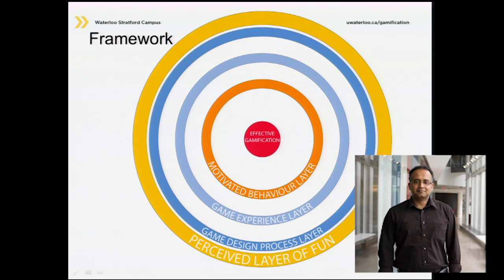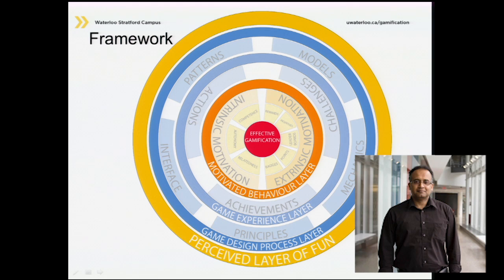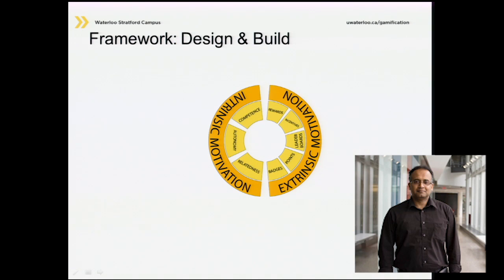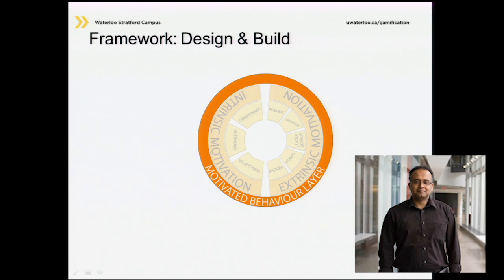Looking at the individual layers, this is the complex model. At the center we have intrinsic motivation on the left side and extrinsic motivation on the right side. You might wonder why it's half and half — it's not fixed. This is just a freeze frame position in time. We're thinking of making this an interactive app where in certain cases intrinsic motivation is higher, and in other cases extrinsic motivation can be higher.